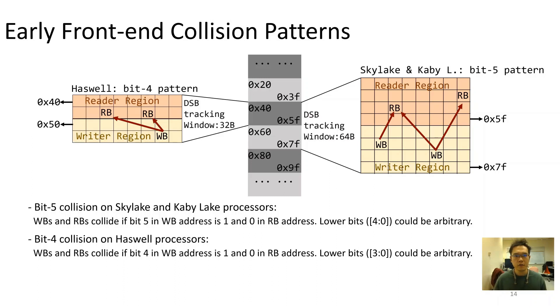By carefully examining related frontend component changes, we note that the tracking window of the decoded stream buffer, or micro-op cache, has been enlarged from 32 bytes in Haswell to 64 bytes in Skylake and Kabylake. Thus, we think it's possible that such collisions are caused due to the unknown predictions built for quick responding inside of the DSB.